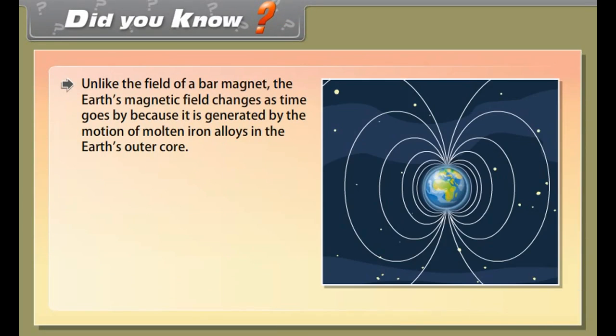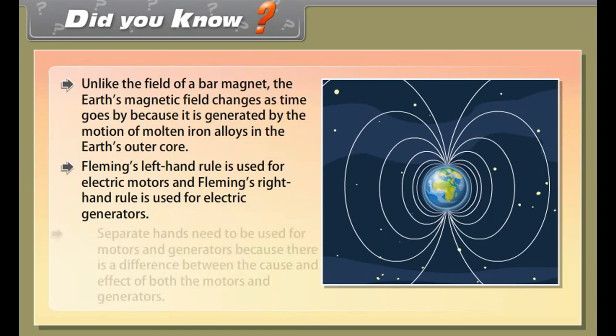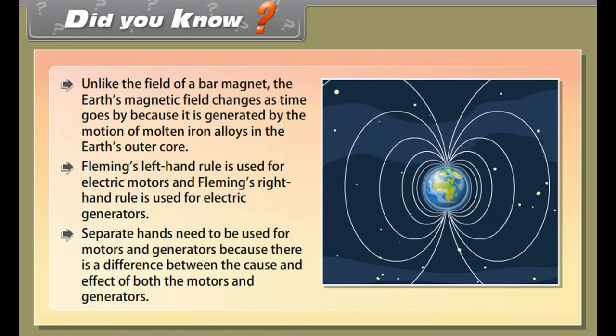Did you know? Unlike the field of a bar magnet, the earth's magnetic field changes as time goes by because it is generated by the motion of molten iron alloys in the earth's outer core. Fleming's left-hand rule is used for electric motors and Fleming's right-hand rule is used for electric generators. Separate hands need to be used for motors and generators because there is a difference between the cause and effect of both the motors and generators.